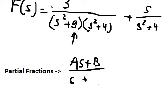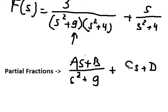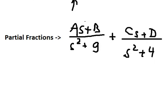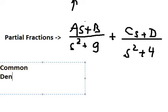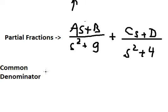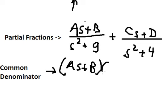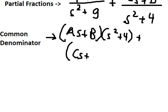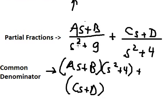Let me write this a little bit clearer. The next term is C·H plus D over H squared plus 9. Now we can do the common denominator. For the first term, it is missing H squared plus 4, so we need to multiply by H squared plus 4. For the second term, it is missing H squared plus 9.